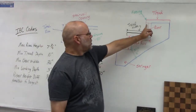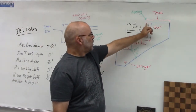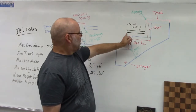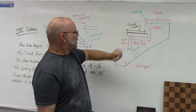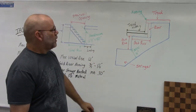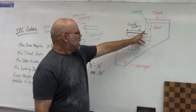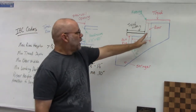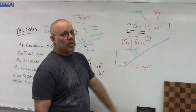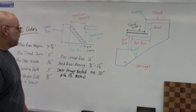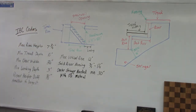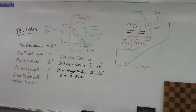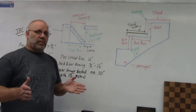The second code is the minimum tread depth — by code that's 10 inches. It's measured from the nosing of one tread to the nosing of the other tread, so that distance has to be a minimum of 10 inches, not counting the overhang.